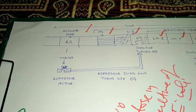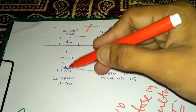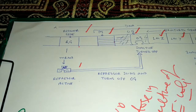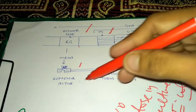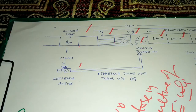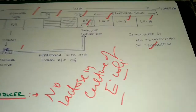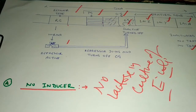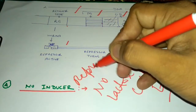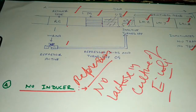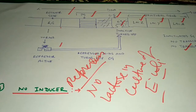In the absence of lactose, the regulator gene synthesizes messenger RNA, which forms a protein that acts as an active repressor. This active repressor binds with the operator gene, switching it off. It inhibits the binding of RNA polymerase with the promoter gene, and hence the structural gene is switched off — no messenger RNA is formed. This condition is called repression: in the absence of the inducer, no beta-galactosidase is produced.